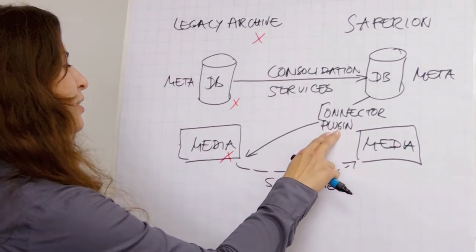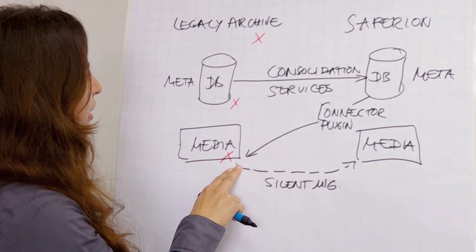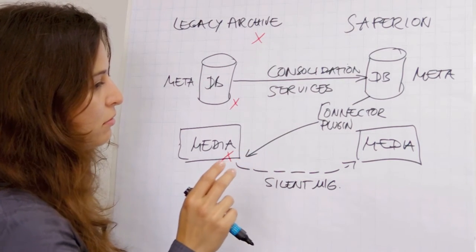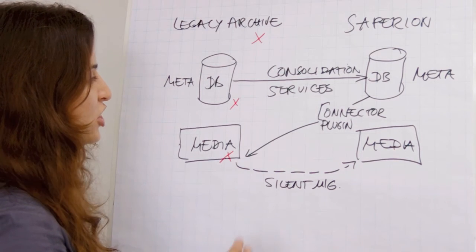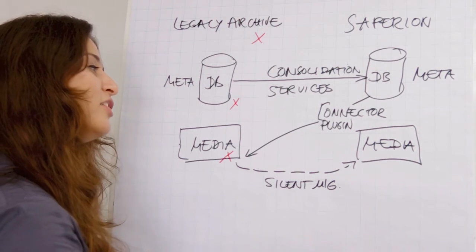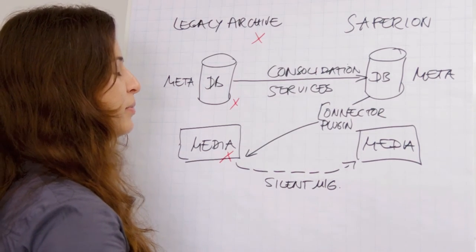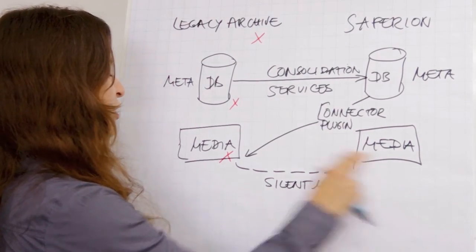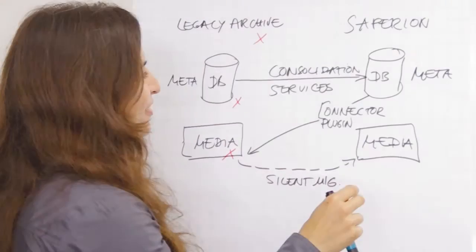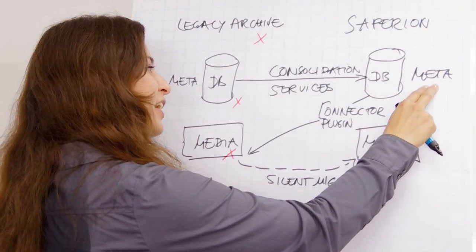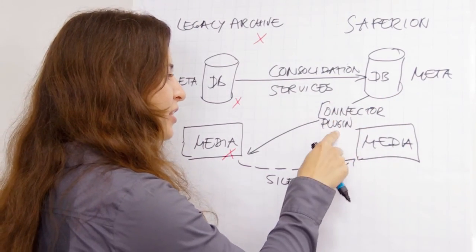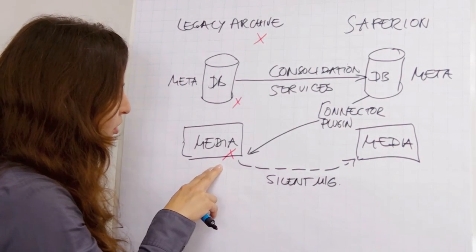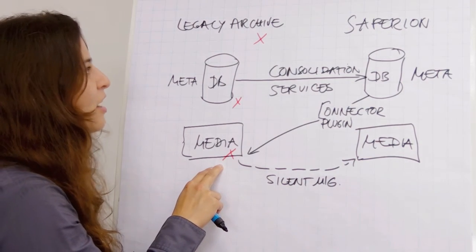The connector plug-in has read-only access to all the documents in the legacy archive. If we do something with documents — change them, update them — or if we get new documents into Sapirion, they will be stored in the Sapirion media. So nothing touches the old archive. From the moment we have all the metadata in the Sapirion database, our connector is up and running and can access documents in the media of the legacy archive.